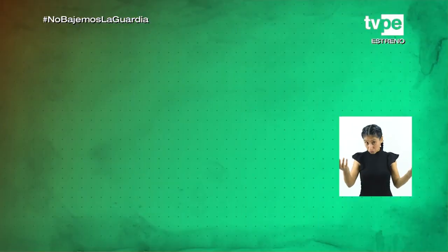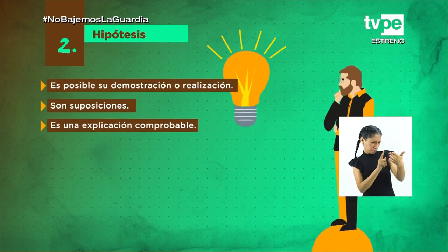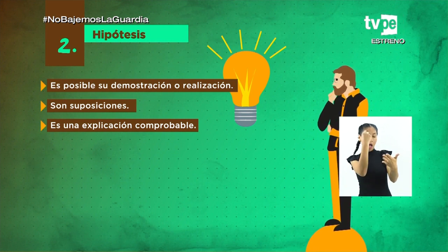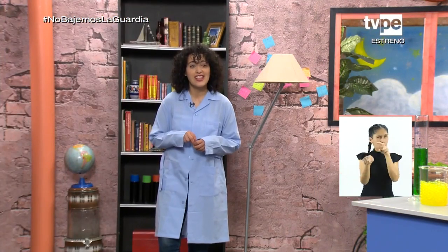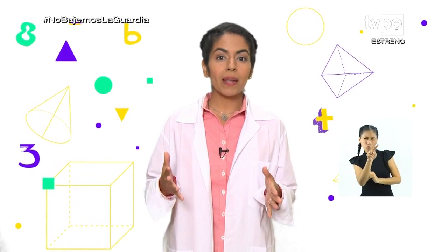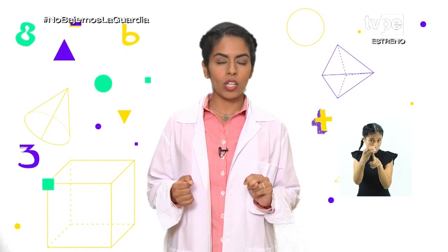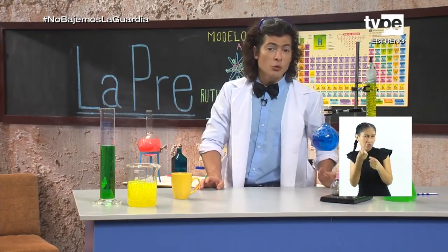El segundo paso del método científico es la hipótesis. Es una posible respuesta a la pregunta o problema, cuya explicación tiene un valor predictivo. Quiere decir que sobre la base de nuestras observaciones podemos sostener teorías que expliquen las posibles causas. Así es. Y quizá lo más importante es que la probable explicación o respuesta sea posible demostrarla en la realidad. Nuestras suposiciones deben estar sustentadas con teorías que integren conocimientos científicos.